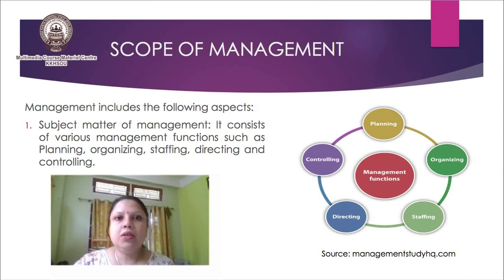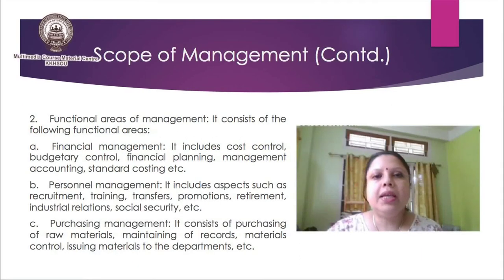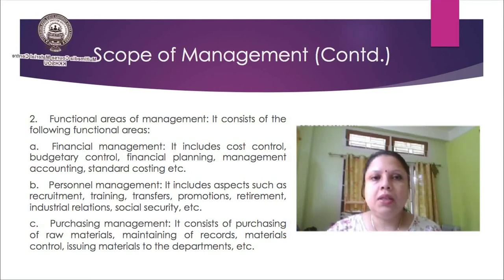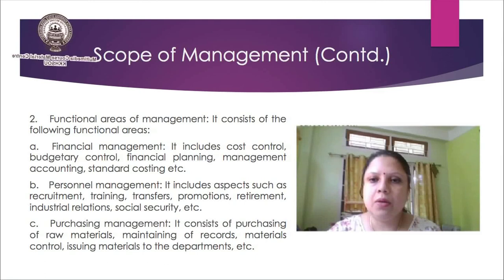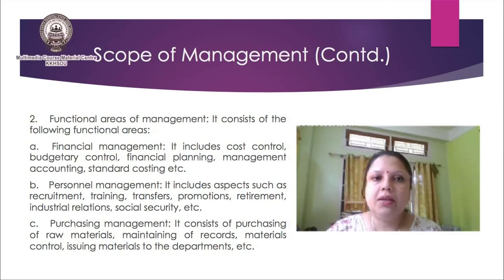Let's discuss the scope of management. First is the subject matter of management, which consists of various management functions such as planning, organizing, staffing, directing and controlling. Next are the functional areas of management. Depending on the size of the organization, the functional areas of management vary. The first core functional area is financial management. It includes cost control, budgetary control, financial planning, management accounting, standard costing, and all aspects related to finance.